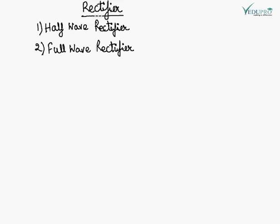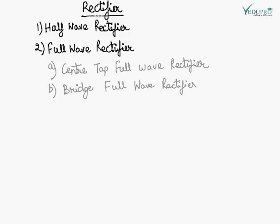A rectifier is a circuit which converts AC into DC. It is one of the best applications of a diode. There are two types of rectifier: half wave rectifier and full wave rectifier. Full wave rectifier is further divided into two types: center tap full wave rectifier and bridge full wave rectifier. We will see the circuit diagram and how each one works.